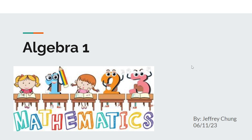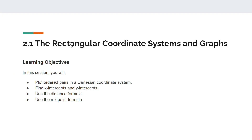Hello, this is Jeffrey and the topic we're going to be discussing today will be the rectangular coordinate system and the graphs. Here are the learning objectives: in this section you'll learn to plot ordered pairs in the Cartesian coordinate system, find x and y-intercepts, and also use the distance formula and the midpoint formula.